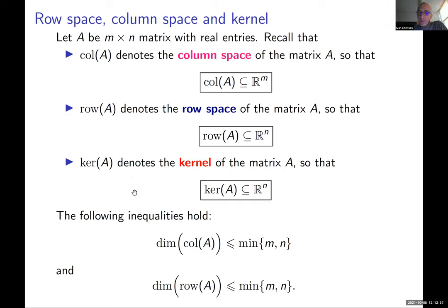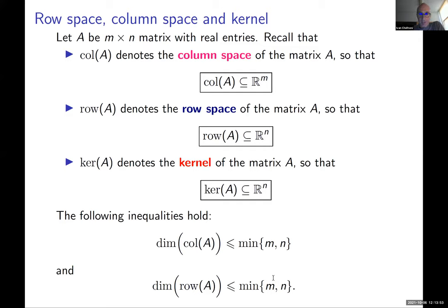Using results proved last week, we can show these inequalities: the dimension of the column space is at most the minimum of m and n. First, the column space lives in Rm so its dimension can't exceed m. On the other hand we have n columns, so the dimension can't exceed n either — it would be exactly n only if all columns are linearly independent. Absolutely the same way, the dimension of the row space is at most the minimum of m and n.